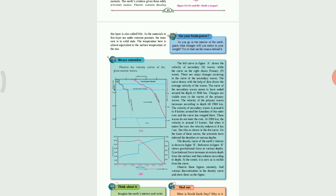Now you can understand what layers are there in the interior of the earth, and what types of waves travel through which layers. Then magnetosphere — its meaning and importance. Whatever exercises are given below the lesson, you have to solve them in your homework book. Thank you.